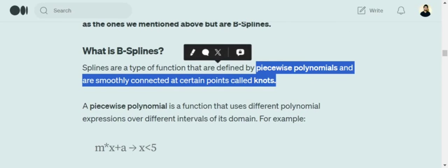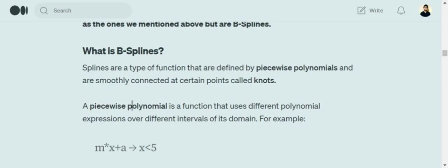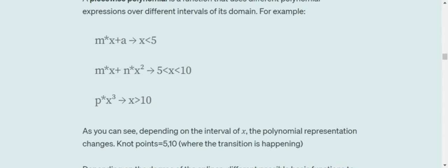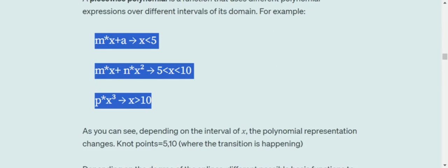So I will be telling you what is a piecewise polynomial and knots as well. First of all, jumping to piecewise polynomial, a polynomial which has a different representation at different intervals of the value. So looking at this particular example, if you see m into x plus a, m into x plus n into x square, when the value of x is greater than 5, less than 10.